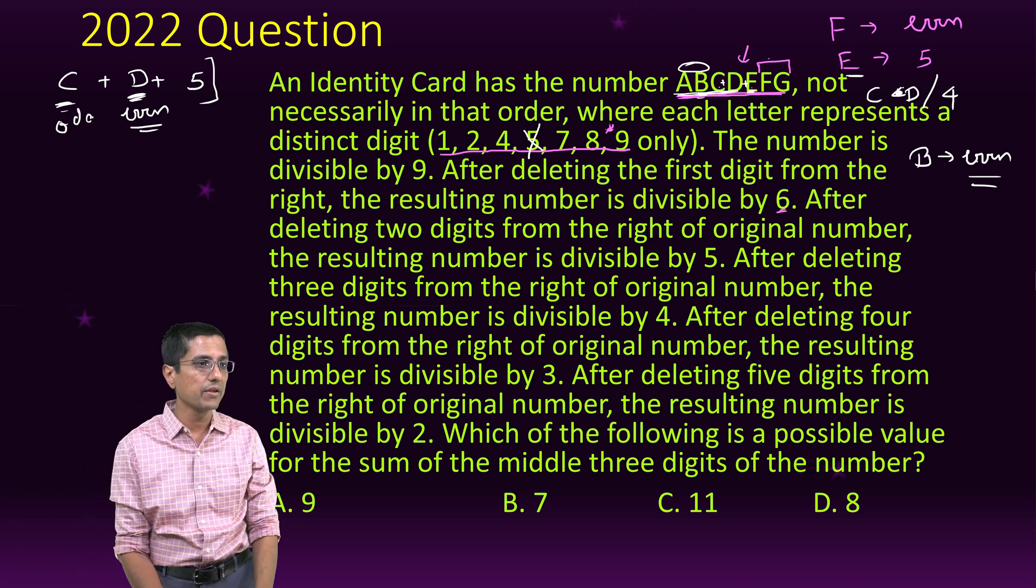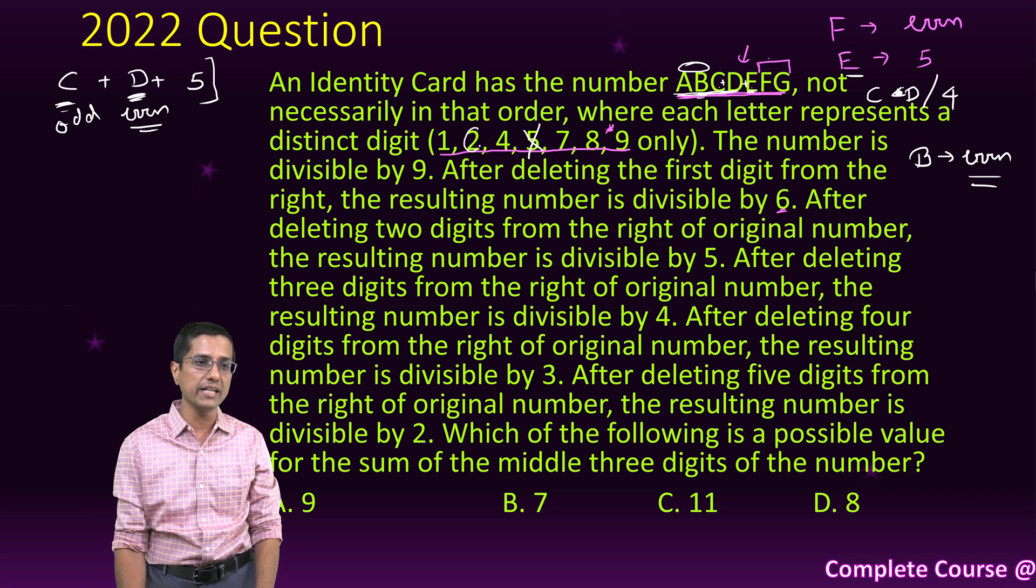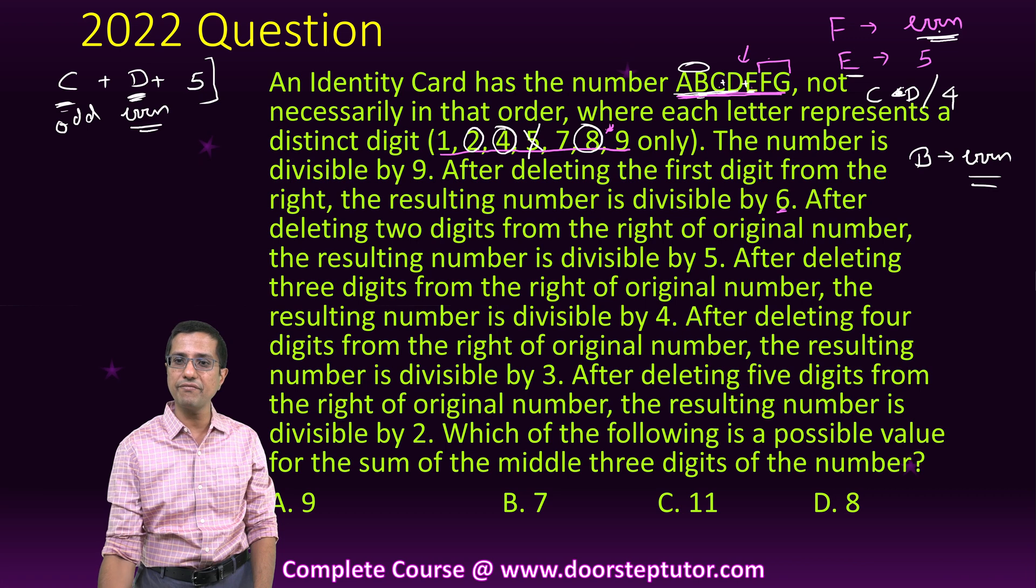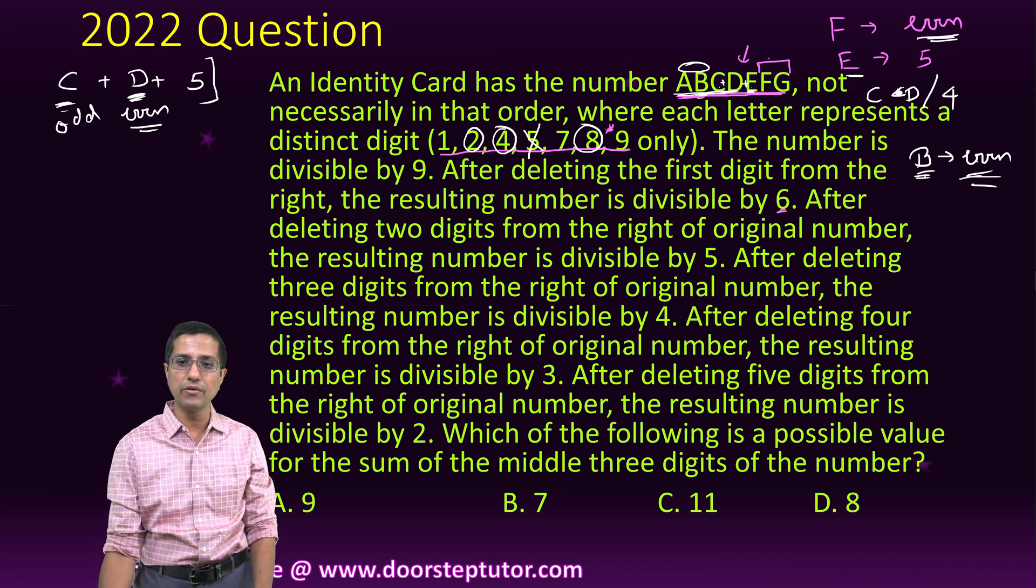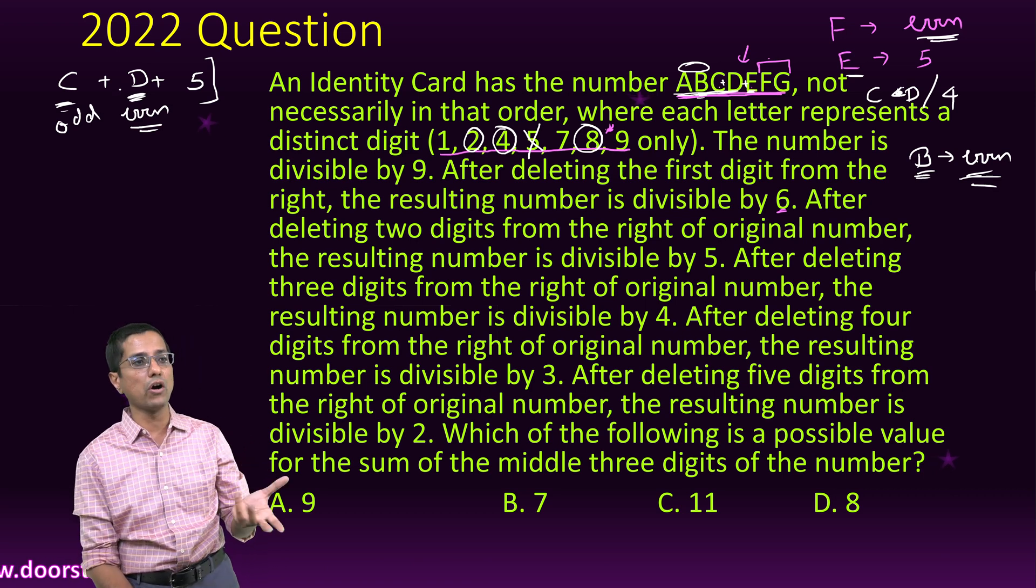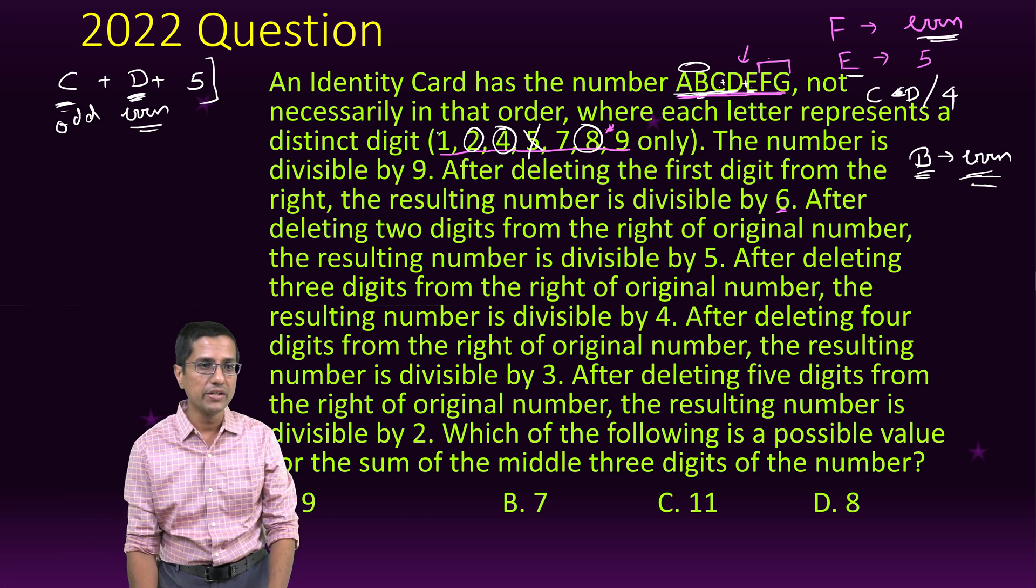D has to be even, it is given because CD is divisible by 4, but C has to be odd, 100%. Why? Because we only have three even numbers here - 2, 4, and 8 - out of which two are taken: F has to be even, B has to be even. Therefore, if D is also even, C has to be odd. So let us try to form all the possible combinations of C and D.